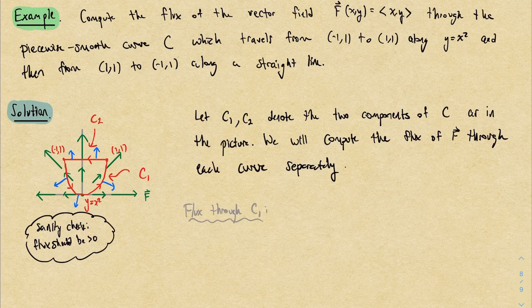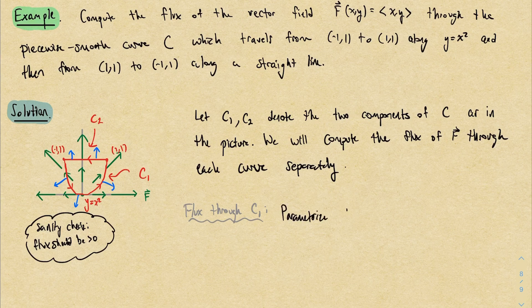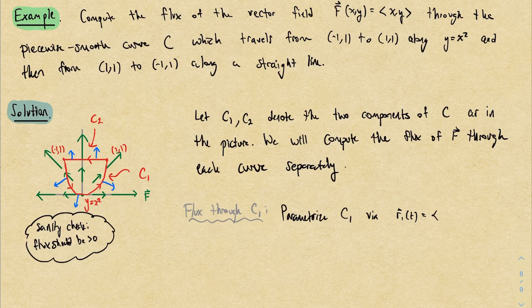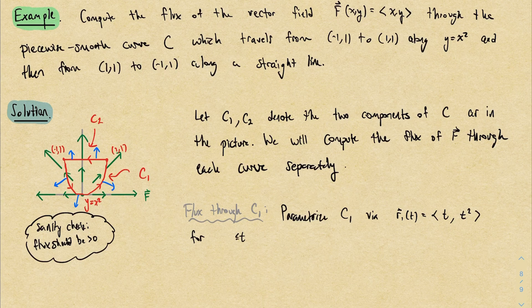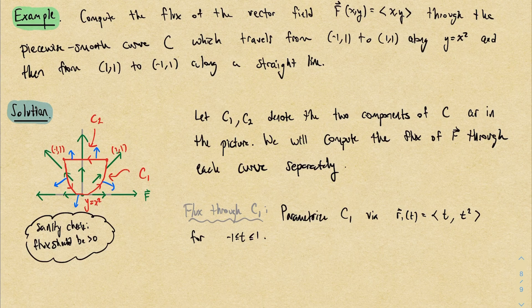Let's do C₁ first. What do we need to do? We need to parameterize the curve. Because the curve is given by the equation y = x², we could declare x to be t, and then y has to be t². And because x is ranging from -1 to 1, this is what t will range from. And this is the correct direction because we travel from the point (-1,1) to the point (1,1).